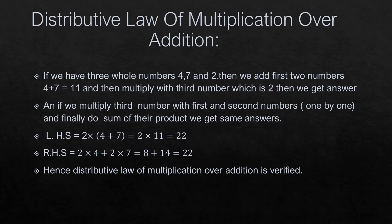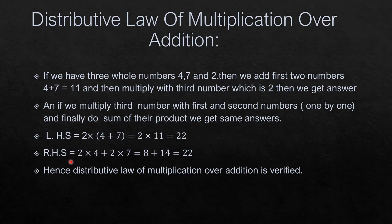What is distributive law of multiplication over addition? We have three whole numbers: 4, 7 and 2. We add the first two numbers 4 and 7 to get 11, then multiply with the third number 2. On the other side, we multiply the third number with the first and second numbers one by one, then sum their products. Left hand side: 2 into (4 plus 7) equals 2 into 11 equals 22.